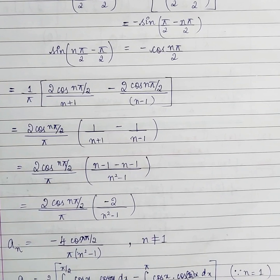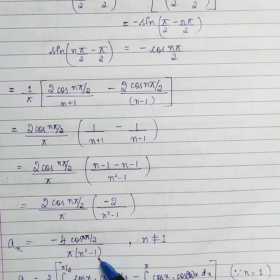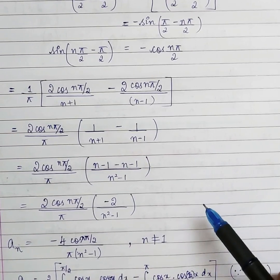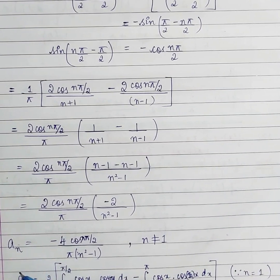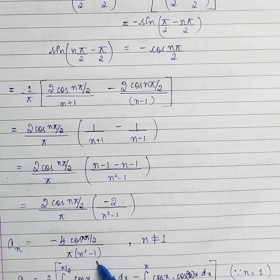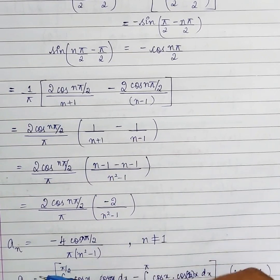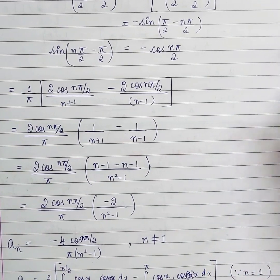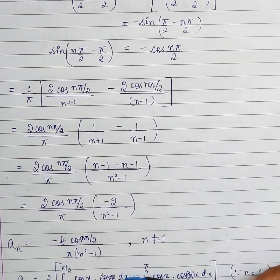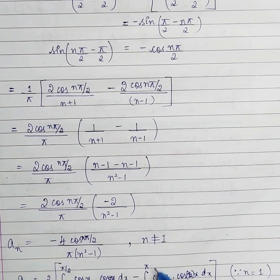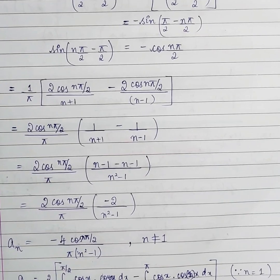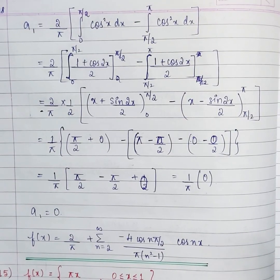Notice that the denominator contains n²-1. When n = 1, the denominator becomes 0, making a_n meaningless. Since the summation runs from n = 1 to ∞, we must find a_1 separately. Fortunately, finding a_1 is easy — we just substitute n = 1 back into the original integral formula.